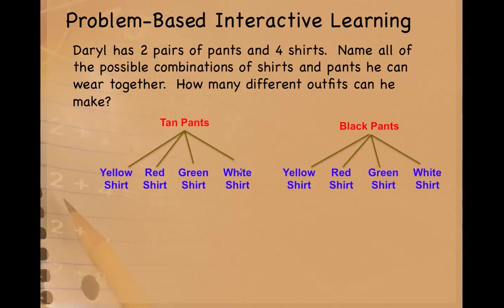Now I'm going to write them down an organized list. I like to abbreviate when I'm creating an organized list. So I'm going to write tan pants. TP stands for tan pants, white shirt. I can just write W.